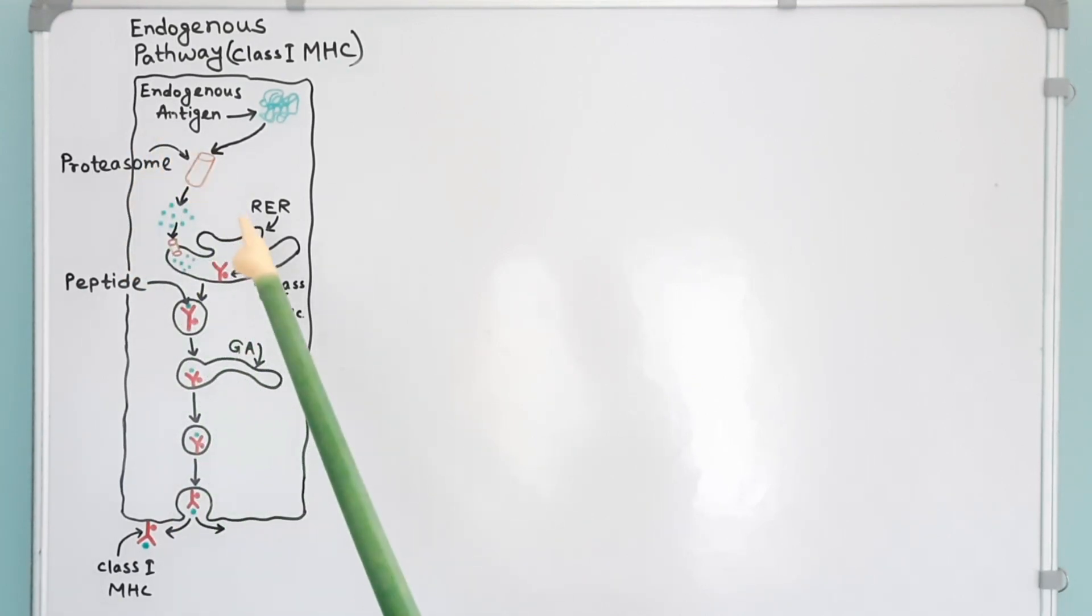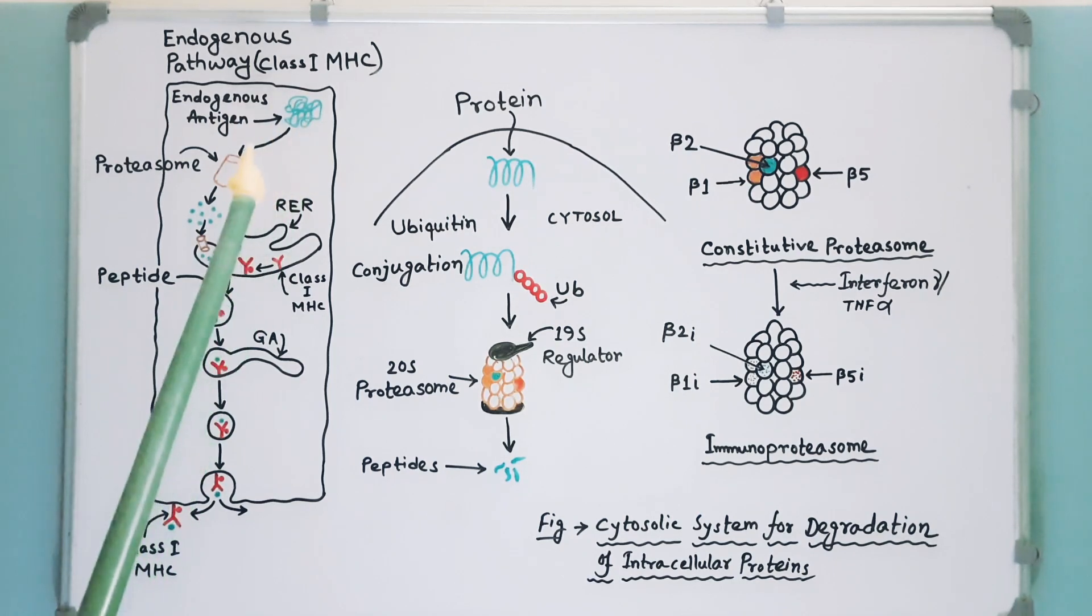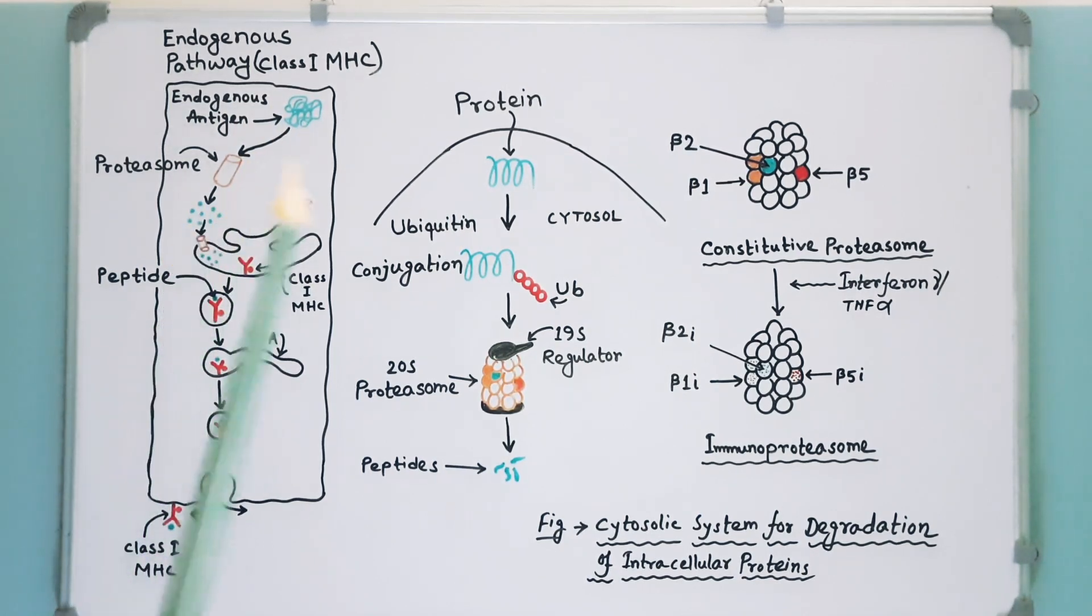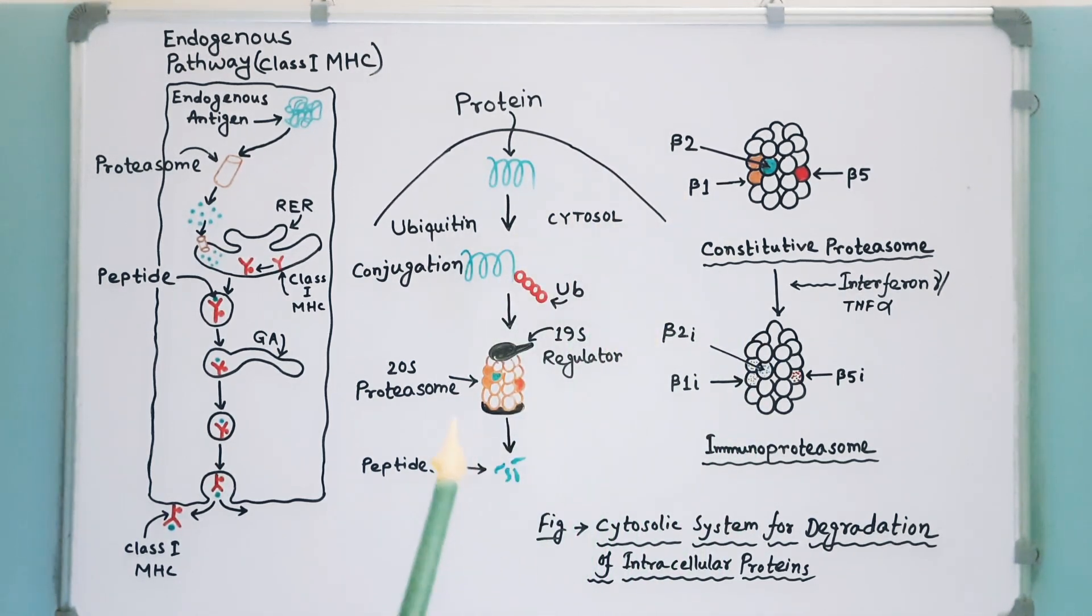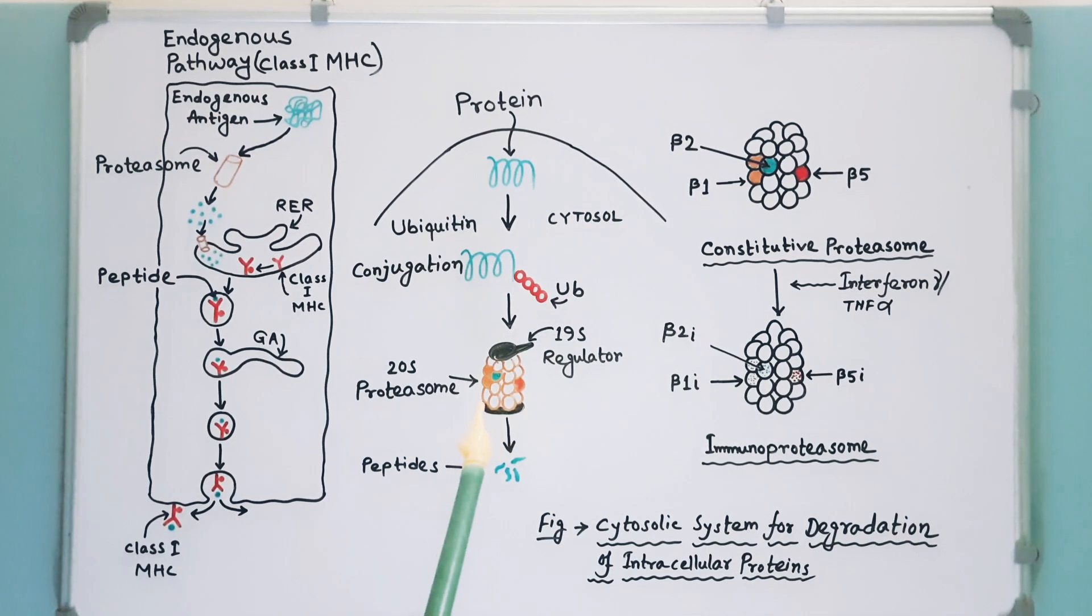Now I will discuss the steps in more detail. First, I will discuss how proteins are degraded into small peptides. See the diagram showing cytosolic proteolytic system for degradation of intracellular proteins. A cytosolic proteolytic system called the proteasome is present in all cells. This is 20-S proteasome. Intracellular proteins are degraded into short peptides by this proteasome.